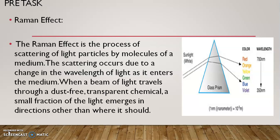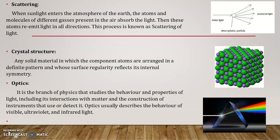A medium can be, for example, sunlight passing through a glass tube of water. When a beam of light travels through a dust-free, transparent chemical, a small fraction of the light emerges in a direction other than where it should. This is the Raman Effect — one medium will pass light. When sunlight enters the atmosphere, the atoms and molecules of different gases absorb the light, then re-emit light in all directions. This process is known as scattering of light.